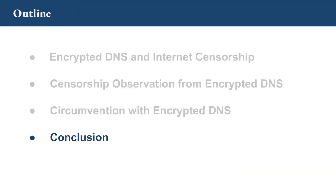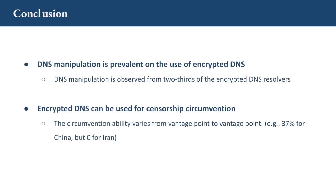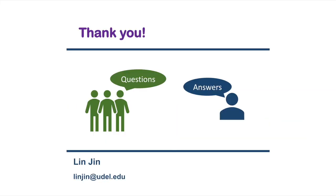Finally, we come to the conclusion. In this work, we provide two main observations: first, DNS manipulation is prevalent when using encrypted DNS, as we observed manipulation from two-thirds of the encrypted DNS resolvers; and second, encrypted DNS resolvers can be used for censorship circumvention, but their effectiveness varies from vantage point to vantage point. Thanks for watching.